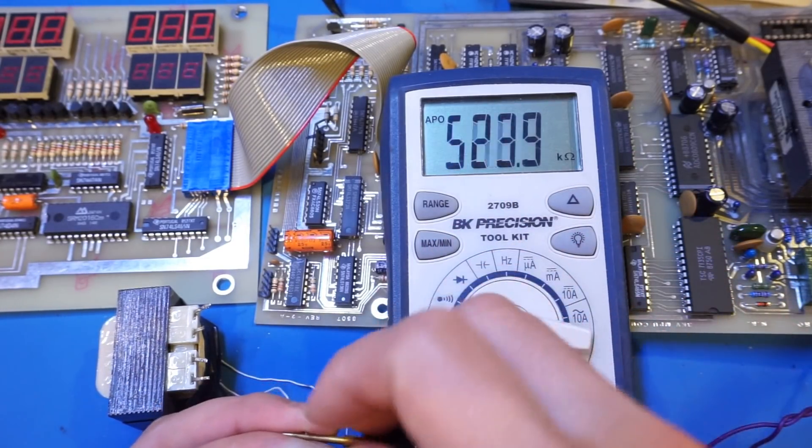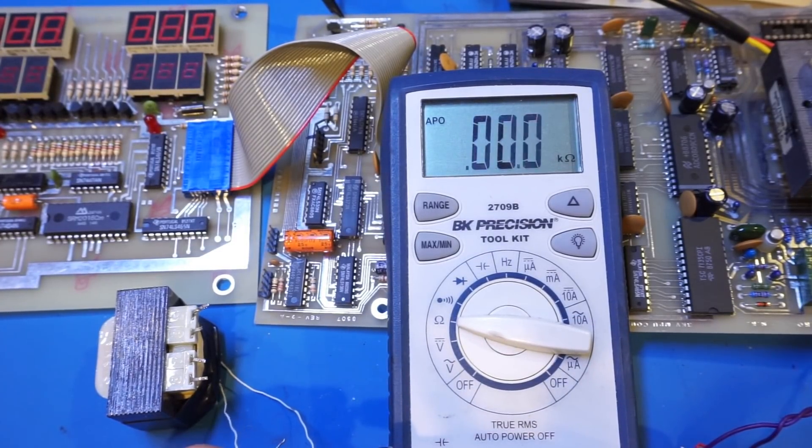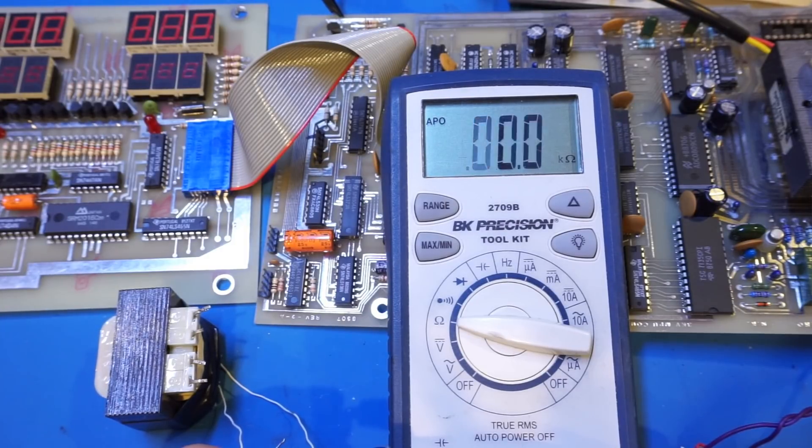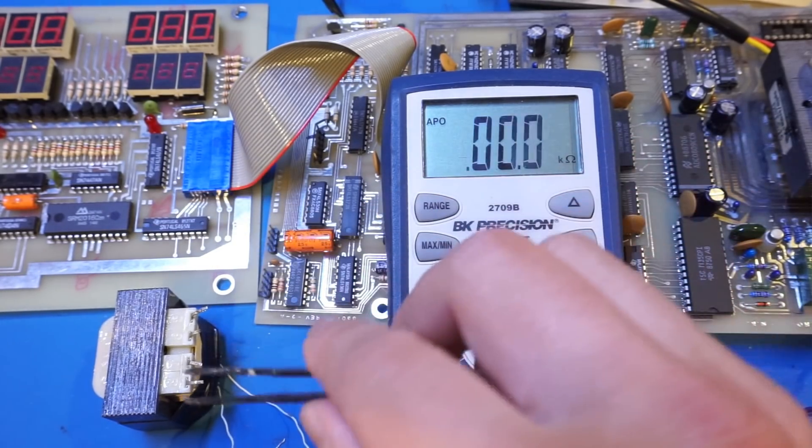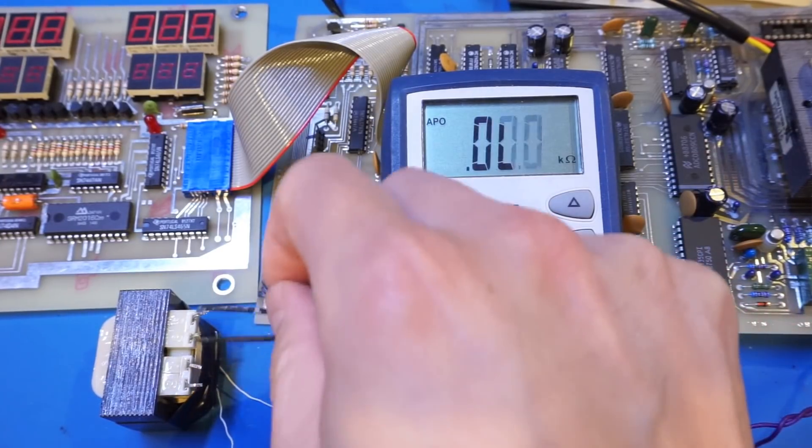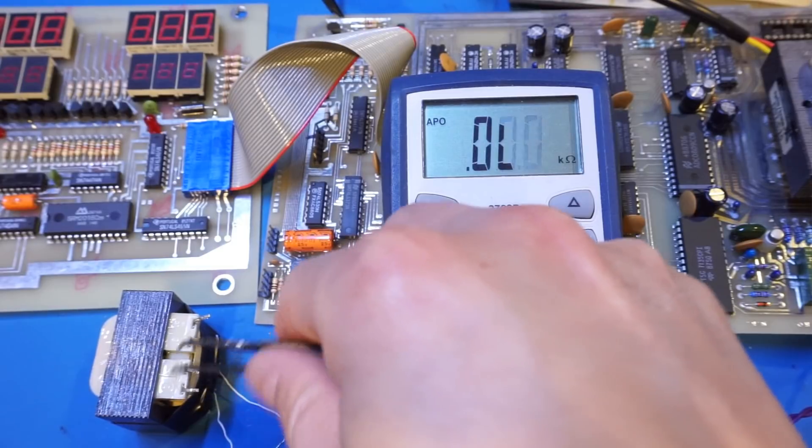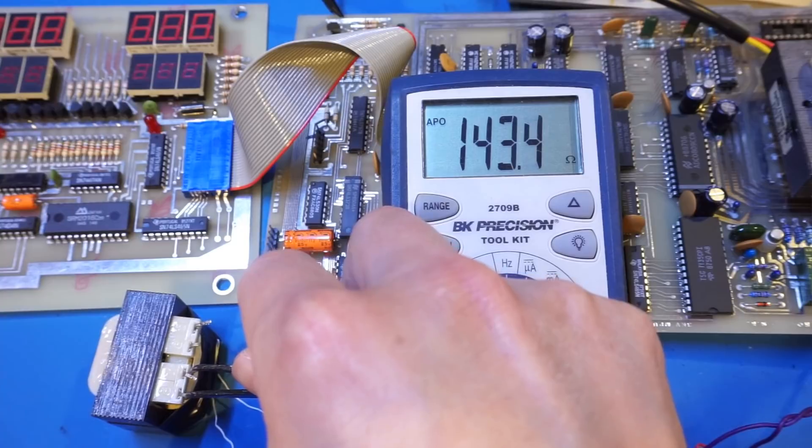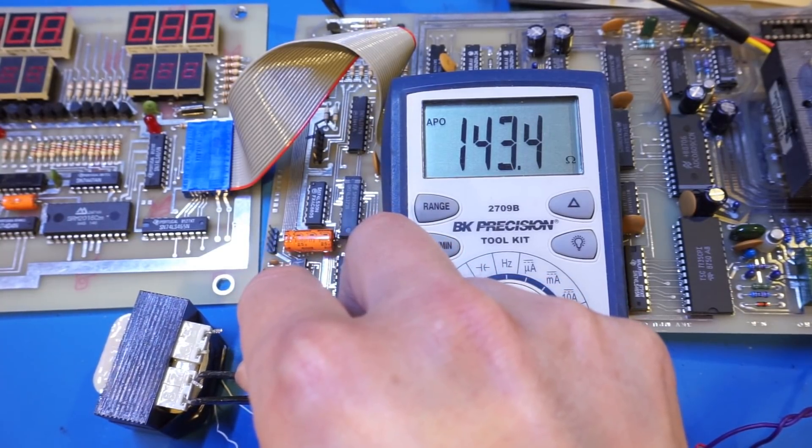I'm going to hold it with my hand, and again it's showing this weird oscillating result. So what I'm going to do is I'm going to use this tweezer to short out one set of the winding here. I don't remember which side is which, but let's try this side first.